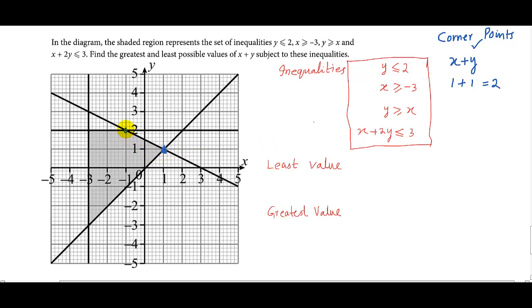Now the second corner point has coordinates minus 1 and 2, so x is minus 1 and y is 2. Minus 1 plus 2, so the answer is 1. This is the third corner point with coordinates minus 3 and plus 2.